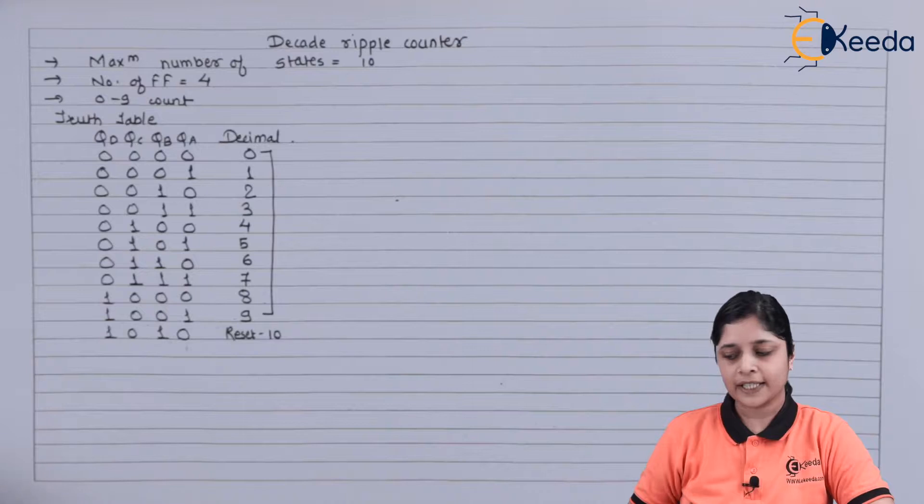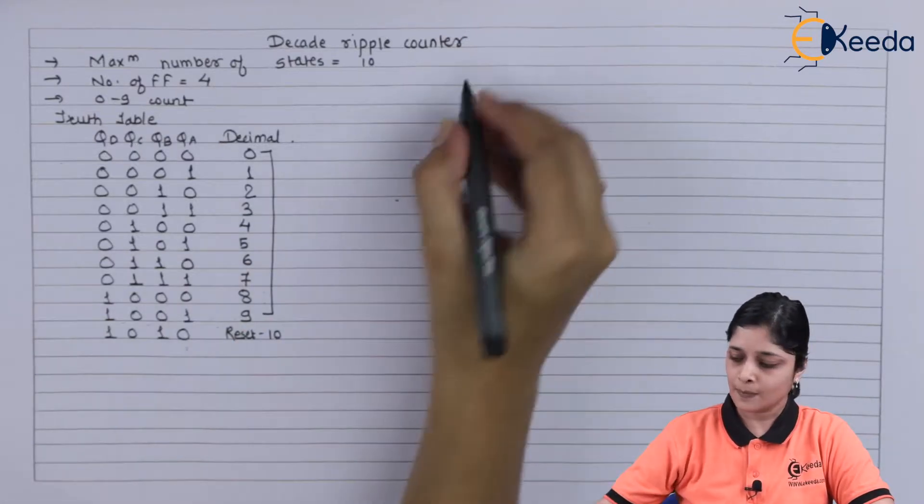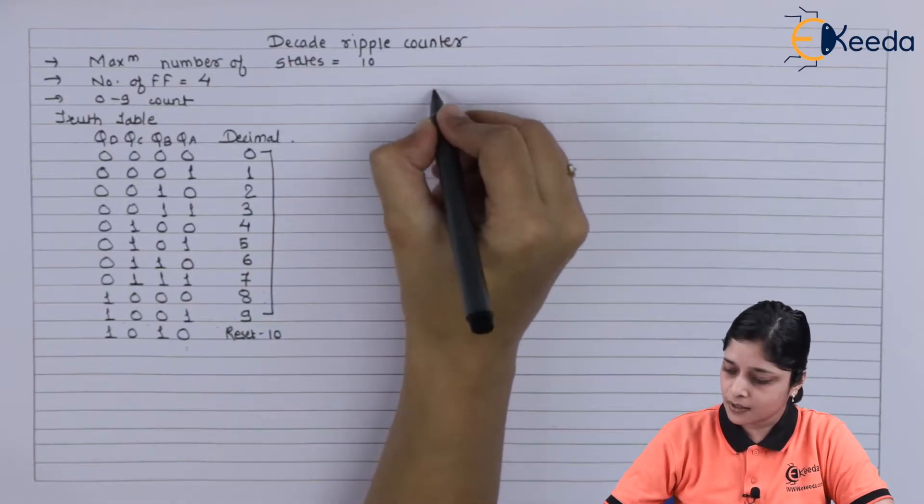So this is all about the decade counter. Now if you see here the logical diagram,